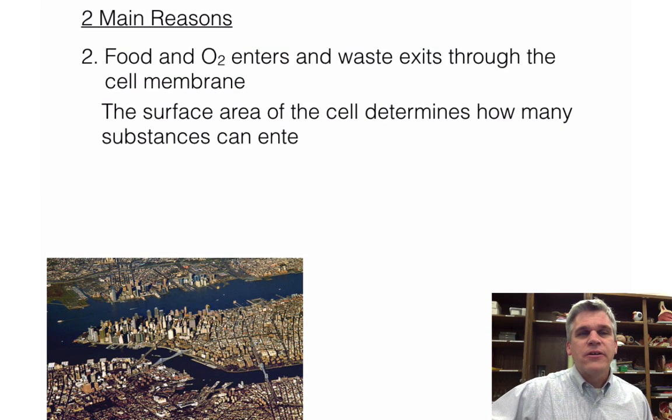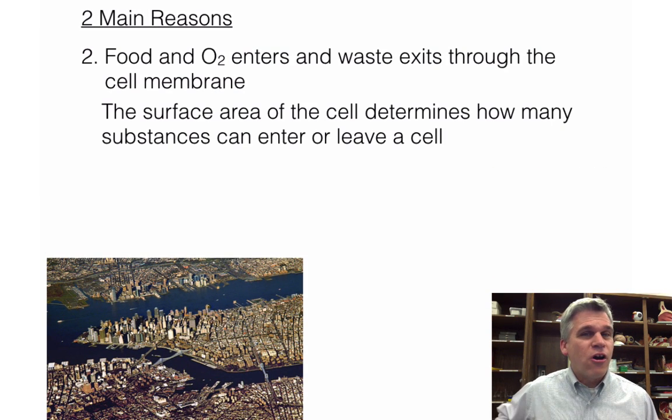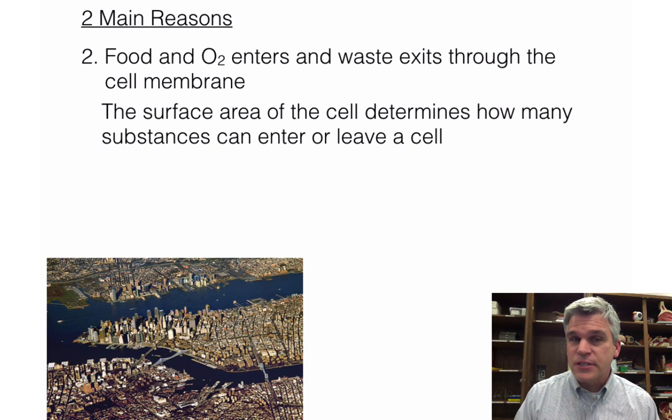And so what we can simply say here is that food and oxygen also need to get inside of the cell. Waste products have to get out of the cell. This is all going to happen as it leaves or enters through the cell membrane. Remember, we talked about how things like diffusion and osmosis and facilitated diffusion work. Here's the thing, though. The surface area of the cell determines how many substances can enter or leave the cell.